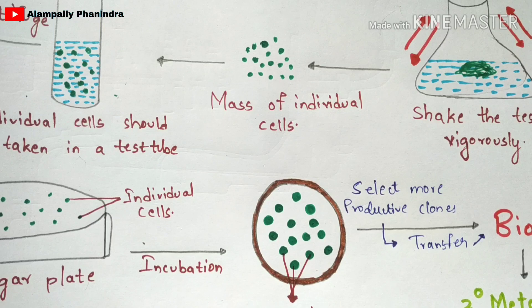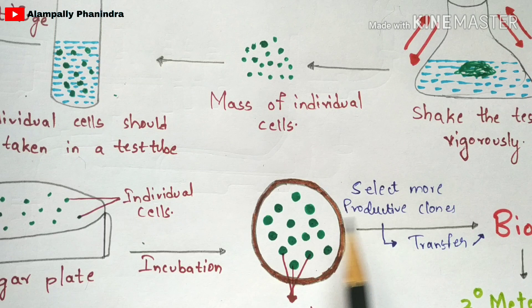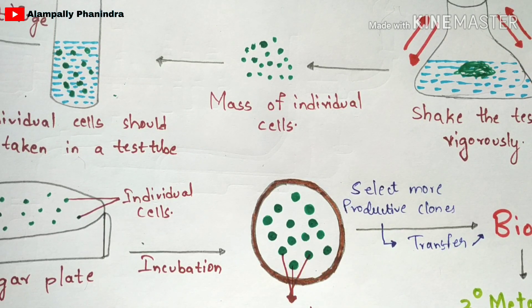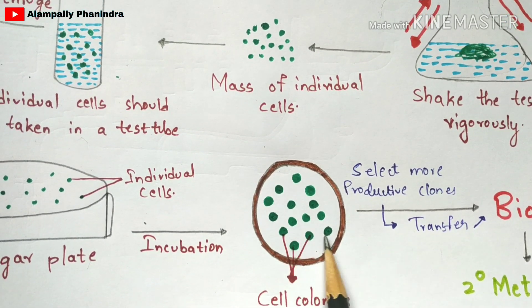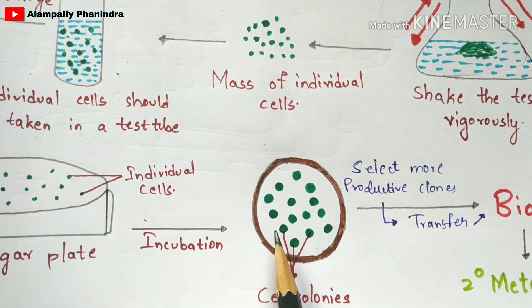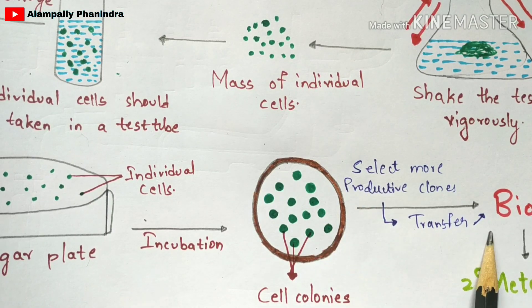From the cell colonies, you are going to select more productive clones — those that are highly reactive and highly functional. The methods used for selection of productive clones include clone pigmentation. Productive clones means selecting the most effective and functional clones, those which give the best results. All of these are the clones present in the form of cell colonies.